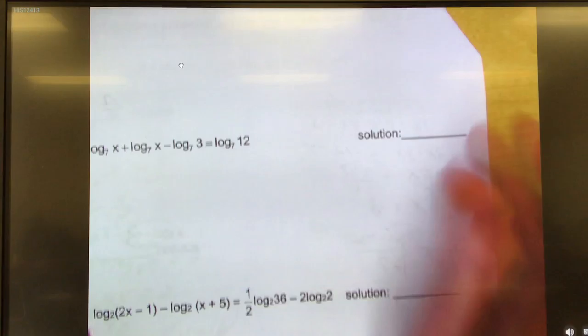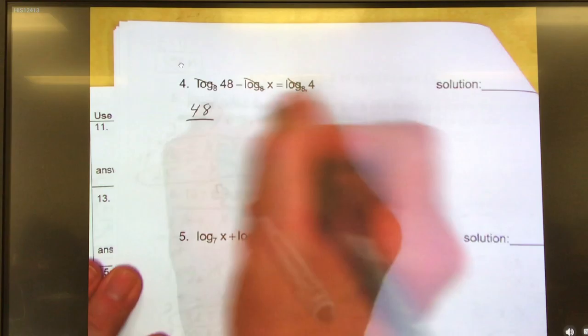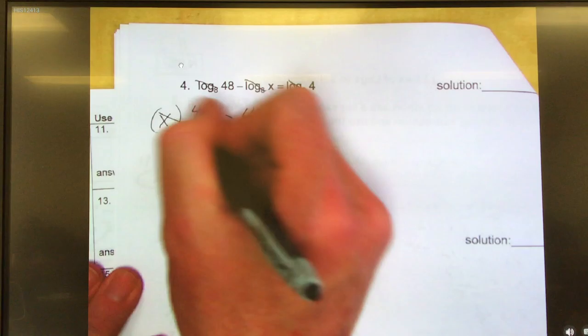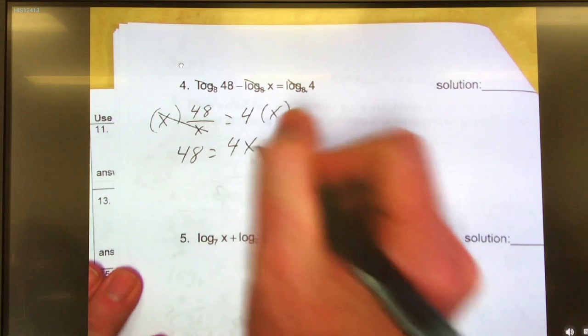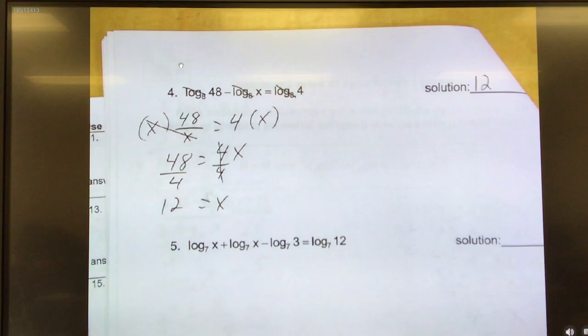On this guy here, same deal. Everything has log base 8, so scratchy, scratchy. I have a subtraction, which means what? Divide. 48 divided by x equals 4. Solving for x, so I've got to get rid of the denominator. So I multiply by x. 48 equals 4 times x, 4x. Solving for x, how do I get rid of the 4? Divide by 4. x equals 12.